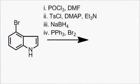They did a few modifications. Phosphorus oxychloride and dimethylformamide will formylate the ring in a Vilsmeier-type reaction. Then tosyl chloride, dimethylamine, pyridine and triethylamine were used to protect the indole nitrogen as a tosylate.